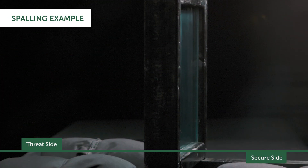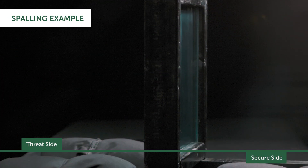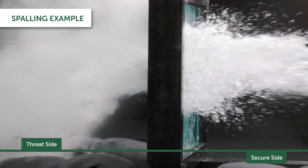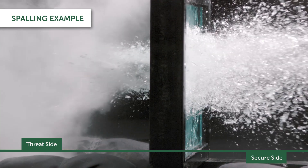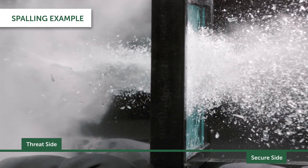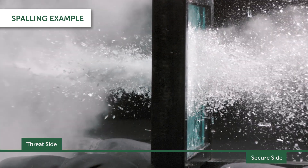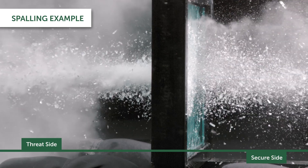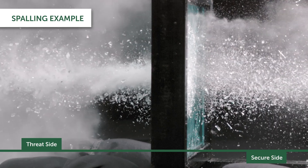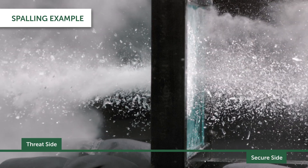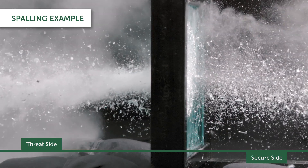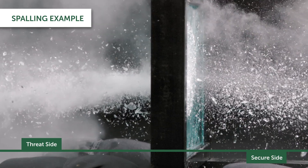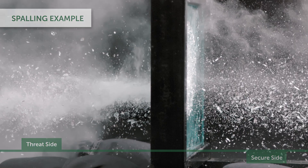Ballistic glass panels have a threat side and a secure side. While spalling on the threat side is not typically considered an issue, spalling on the secure side may be. In cases where people or delicate materials are located near a window, spalling should be mitigated or completely avoided.